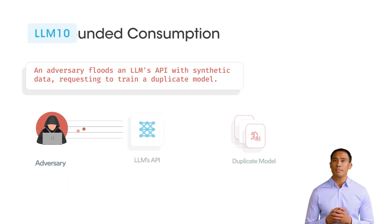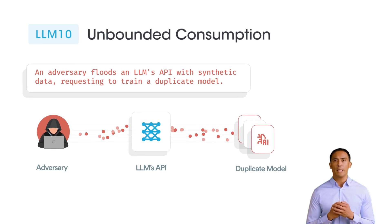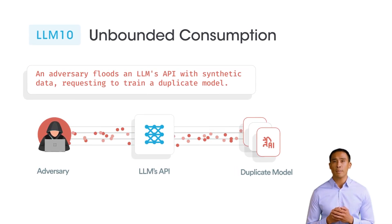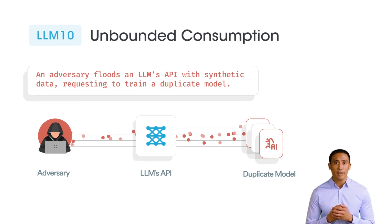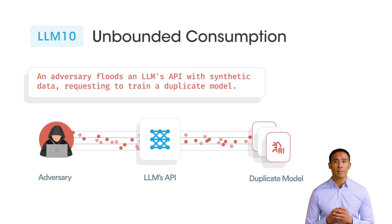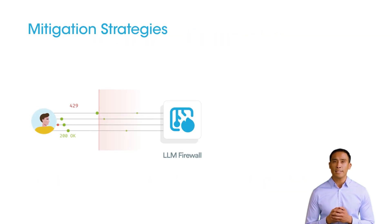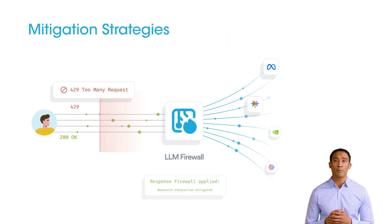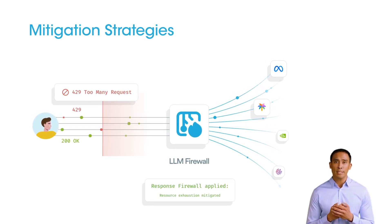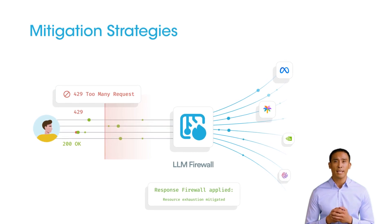Unbound consumption refers to the excessive use of LLMs or uncontrolled inferences that lead to resource exhaustion, service degradation, or functional model replication. Example: an adversary floods an LLM API with synthetic data, requesting to train a duplicate model. Limit excessive requests using response firewalls to prevent resource exhaustion. Monitor and block patterns indicating denial of service or resource abuse. Enforce quotas and rate limiting to safeguard against overuse.